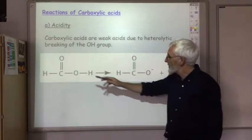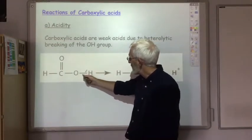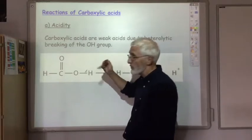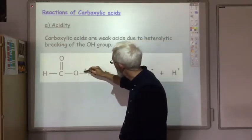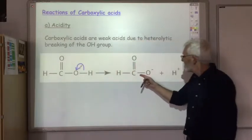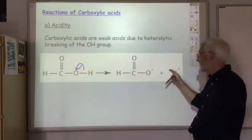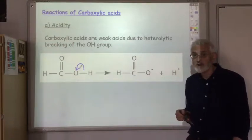So here's our carboxylic acid. This bond here, the OH bond, breaks. Both electrons go into the more electronegative of the two atoms, which is the oxygen, leaving the carboxylate ion and the H plus ion, which is responsible for the acidic nature of the carboxylate.